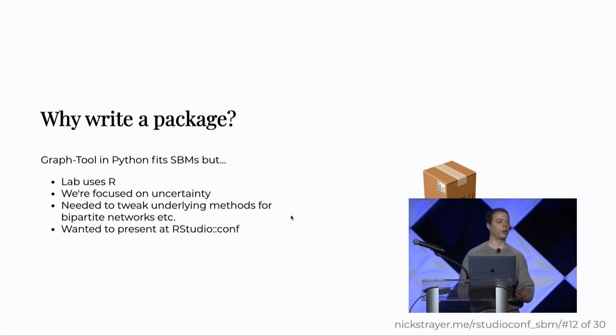So next is why would I write a package to do this? There's a package in Python called graph tool and it fits stochastic block models. But there's a few issues with why we didn't use it. One is that my lab uses R exclusively. So every time I would show them Python code, people's eyes would glaze over. We're also quite focused on uncertainty. And graph tool is great, but it doesn't focus quite on uncertainty as heavily as we would like. We also needed to tweak the underlying methods to optimize it for these bipartite networks. And I wanted to present at RStudio conference and I couldn't do that if I wrote a Python package.